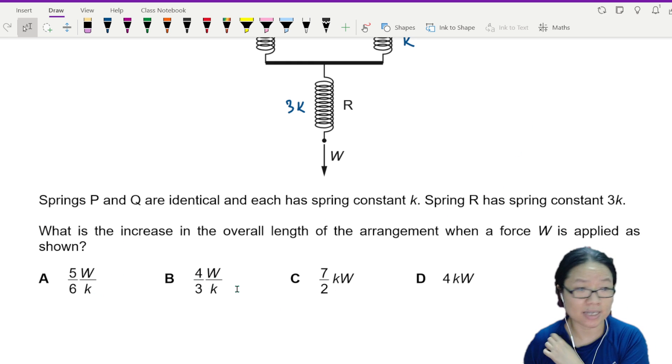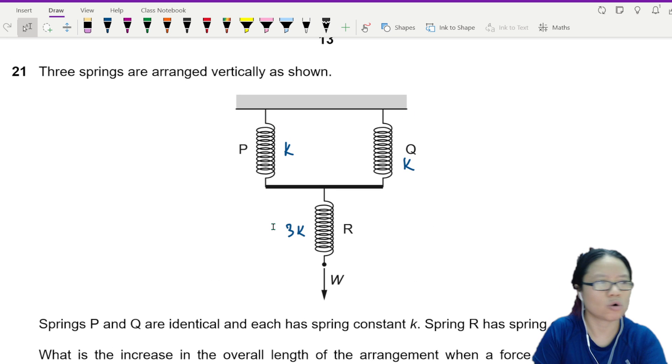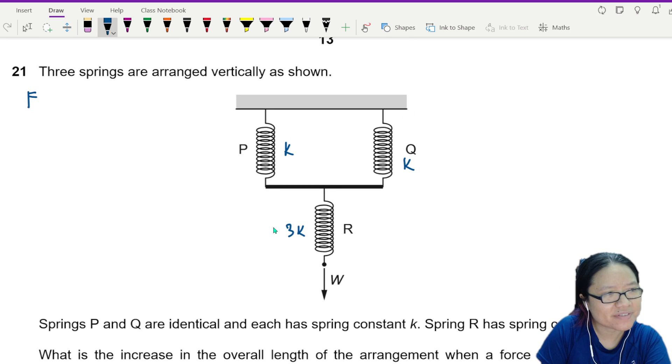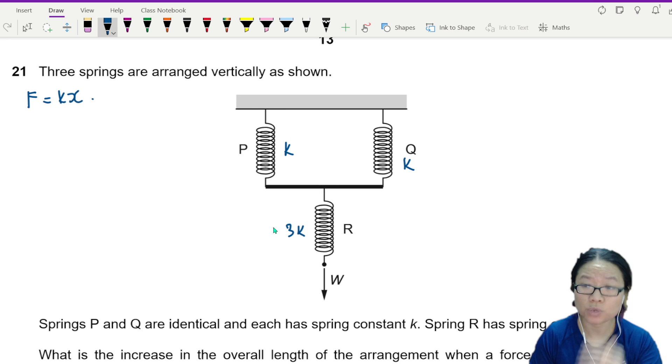All this is in terms of W, so don't panic first. Think about your Hooke's Law. What is your Hooke's Law? F is equal to KX. So we do layer by layer. Let's consider spring R.